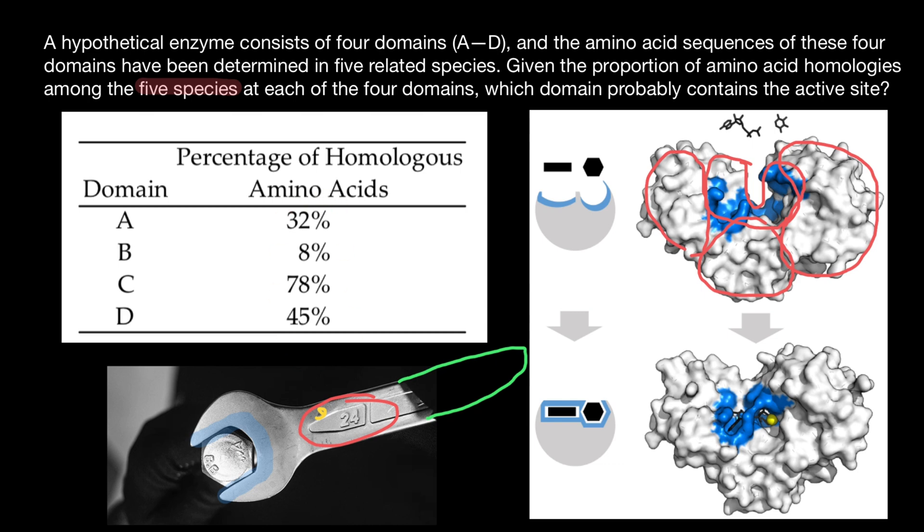And of course, as you now know, the greatest homology is going to be in the active site. So this is going to be the site with the least number of mutations across the species. And as you see, according to our table, this is going to be fragment C or domain C.